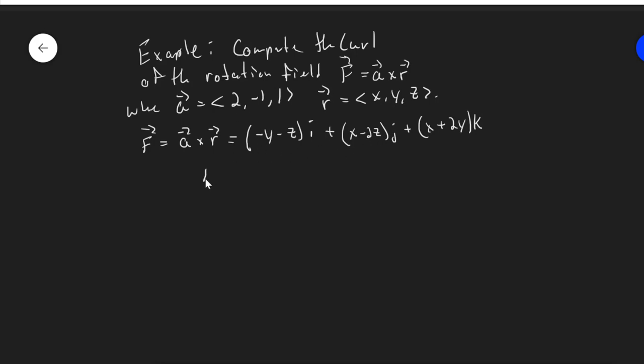So here's my vector field f. I'm going to write it as a vector. I always like this notation a little bit better. So this is minus y minus z, x minus 2z, and x plus 2y. And let's compute the curl of this.